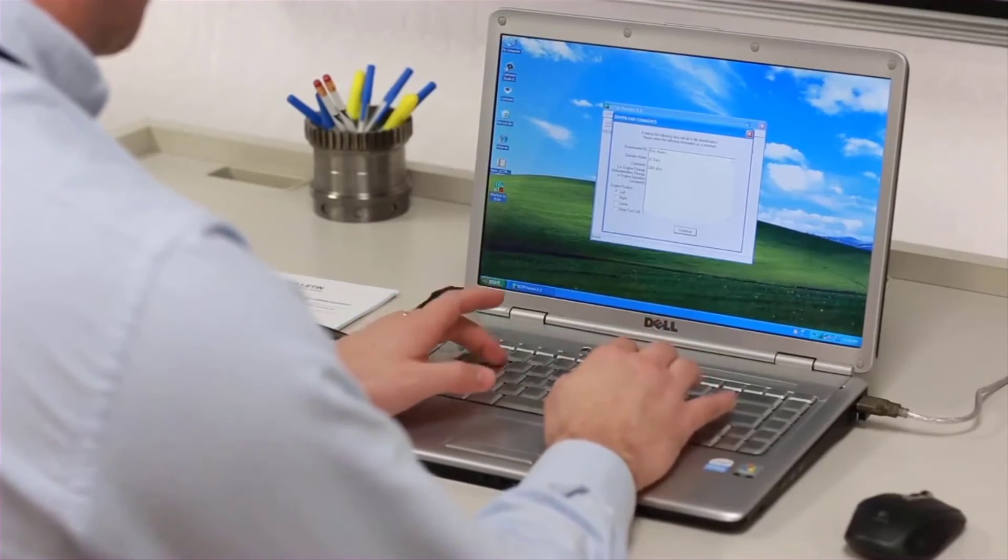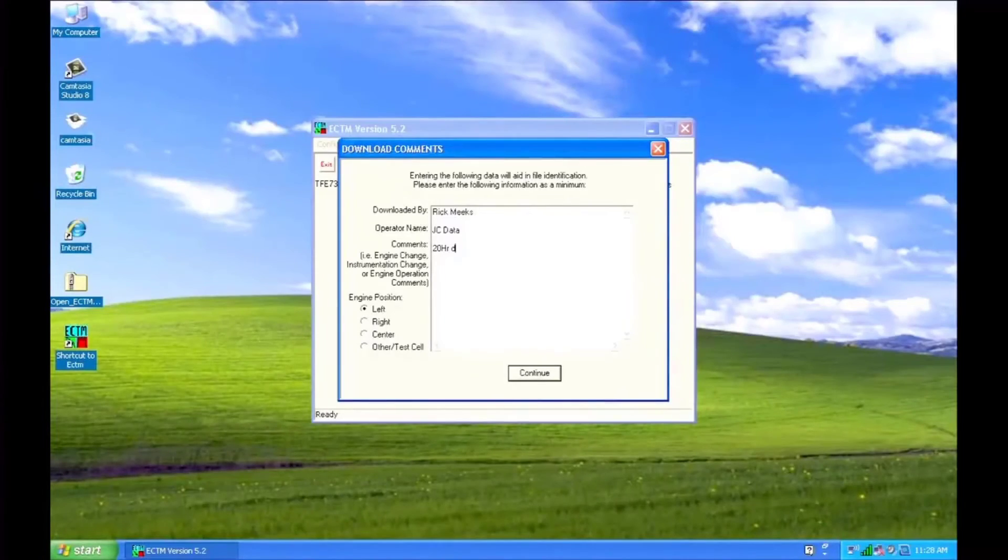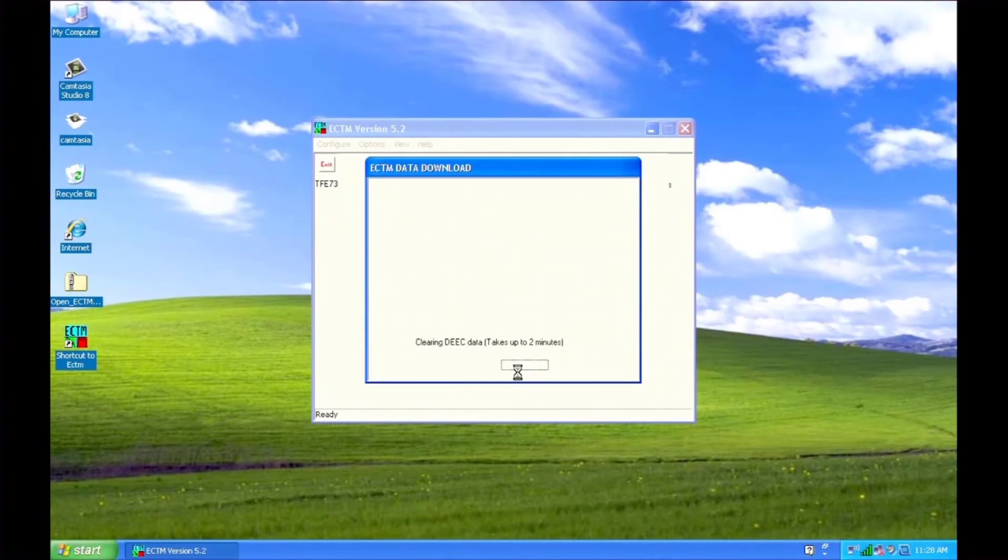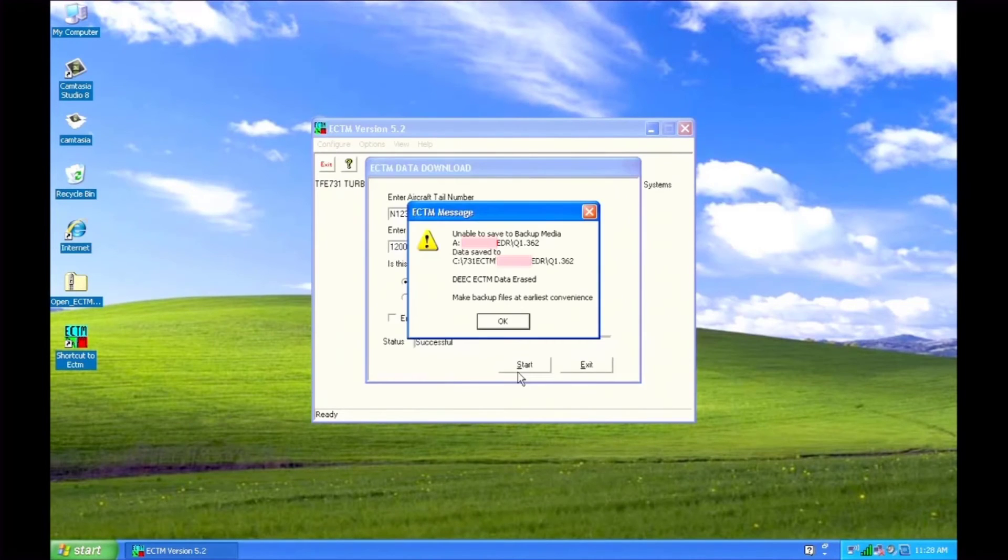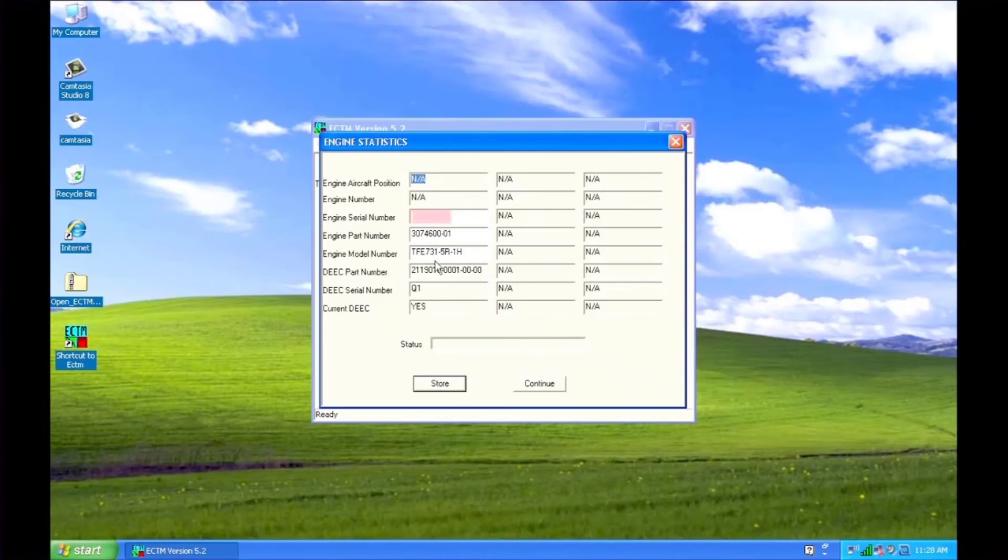Leave the Engine Build Data box unchecked and start the download. Fill in the information in the Download Comments window. Select the engine position and continue. You'll get a message saying that the data is unable to be backed up. By default, the ECTM software attempts to back up the download data to the A drive. However, the data is automatically backed up to your hard drive, so just continue the download.